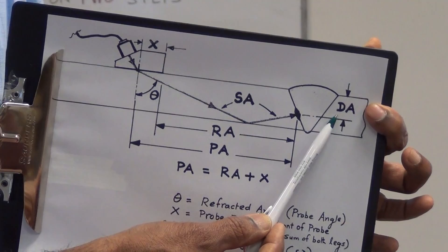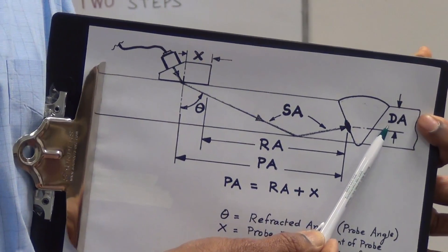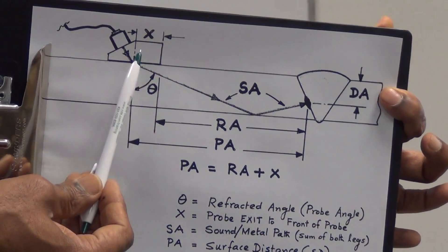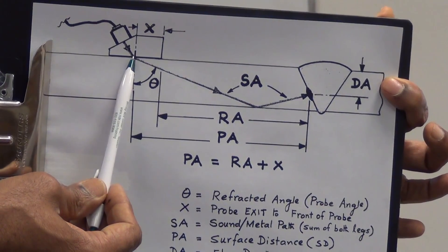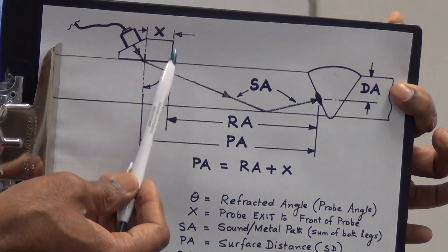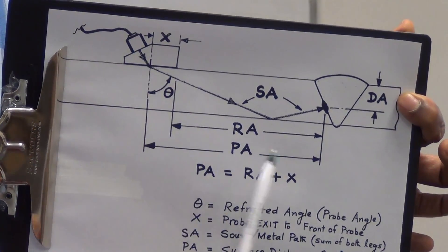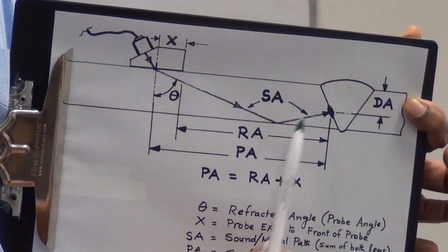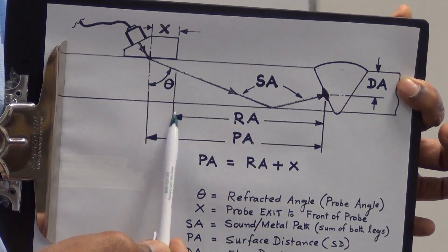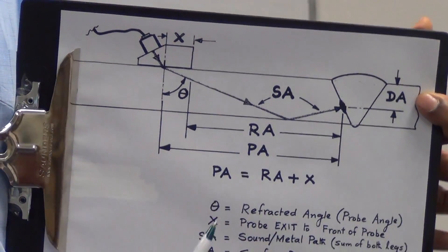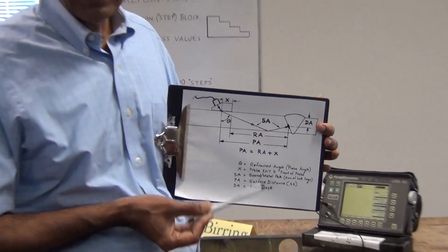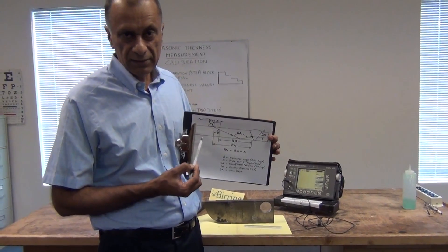Now to make the inspection a little bit easier, what we do is we enter the value X which is the distance from the exit point to the front of the wedge. And then the machine actually gives us the distance of the flaw which is right here from the front of the wedge, which is RA. So I'm going to go through all these steps to show you how this is accomplished.